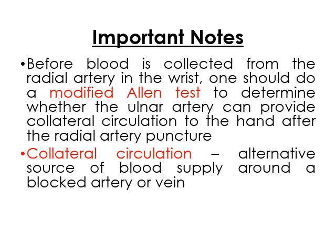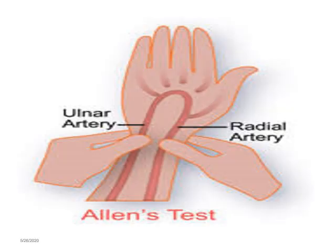Important note: before blood is collected, you should perform the modified Allen test. It is used to determine whether the ulnar artery can provide collateral circulation to the hand after the radial artery procedure. Collateral circulation is the alternative source of blood supply around a blocked artery or vein.